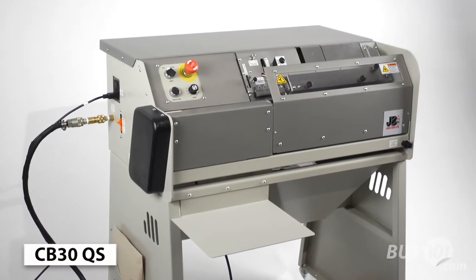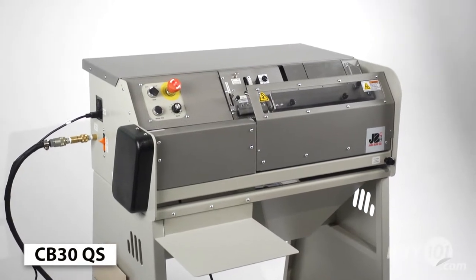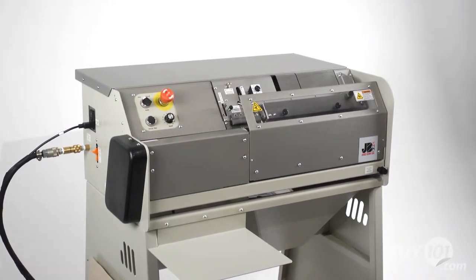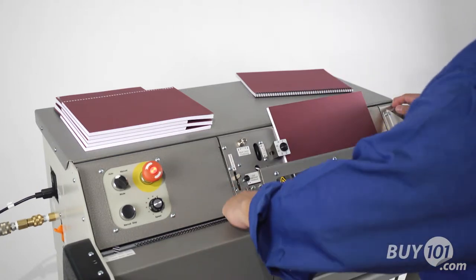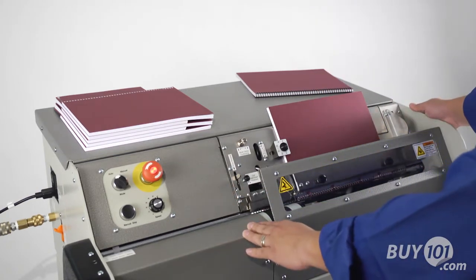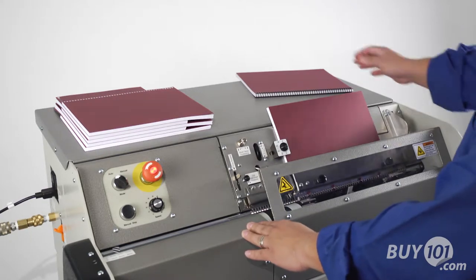The CB30QS is the most affordable and easy to use automatic coil inserter on the market. Designed to accommodate the large volume runs of trade binderies and in-plant operations, it is also well suited for the requirements of today's digital on-demand print environment.